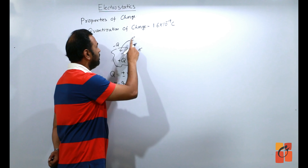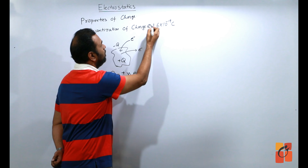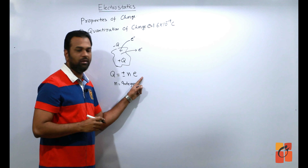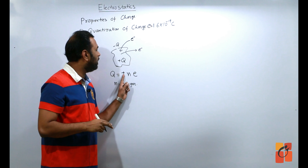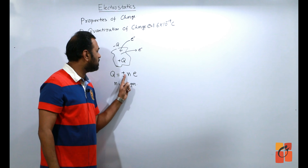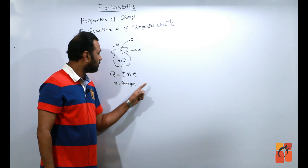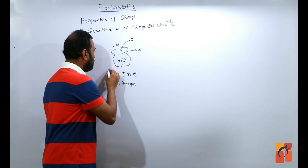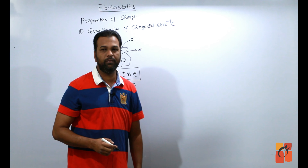Last lecture में हमने charging of body में पढ़ा था कि electron को निकालने से — if you remove the electrons from a substance, the substance becomes positively charged. And if you provide electrons to it, the substance becomes negatively charged. If we remove one electron, the charge is 1.6 × 10⁻¹⁹ coulomb.